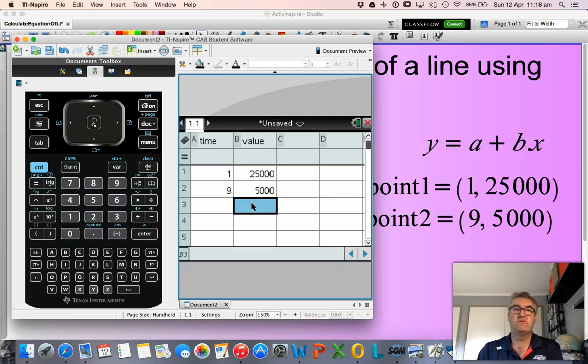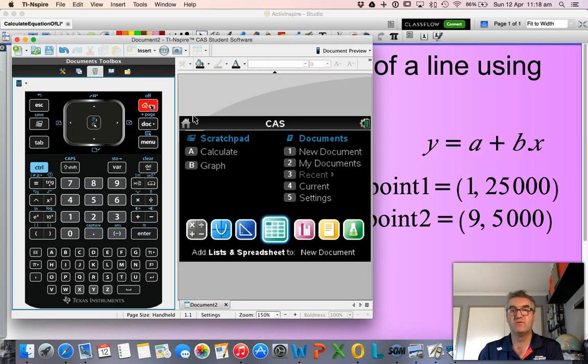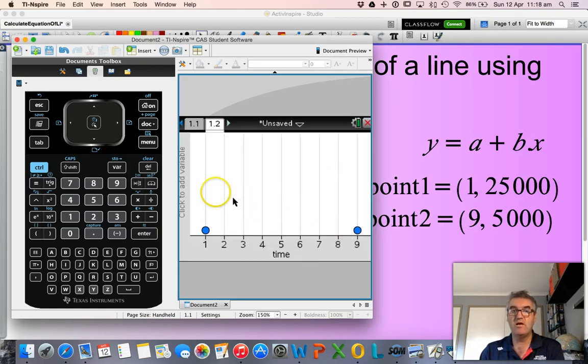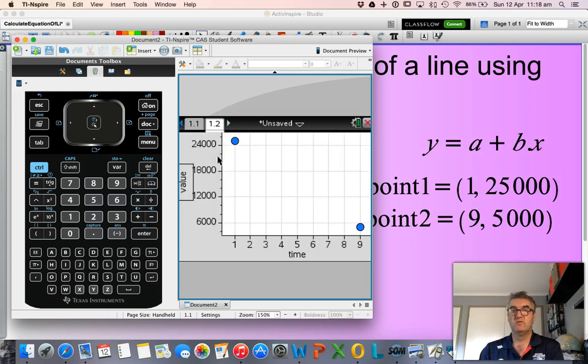And now what I'm going to do is just create a graph of that. So this is the one here that I want. And now I need to label the axis. On the x-axis that was my time. On my y-axis was my dollar value. And that there are the two points that I had on the graph.